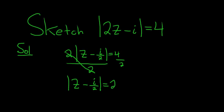So this is the set of all the complex numbers in the plane, all the points in the plane, where the distance from that complex number to i over 2 is equal to 2.